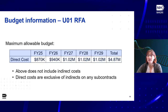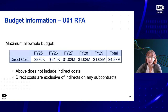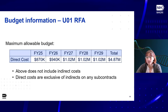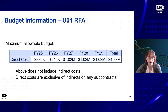As far as the budget for the U01 RFA, these are the maximum allowable direct costs. Starting in FY25, that is $870,000, going up to $1.02 million in the final year. That does not include indirect costs, and the direct costs are exclusive of indirects on any subcontracts.